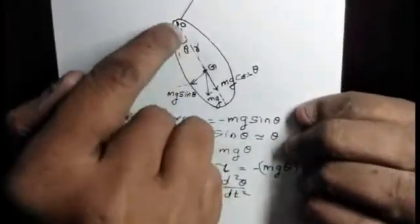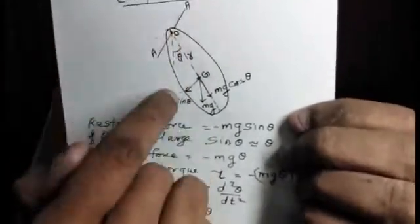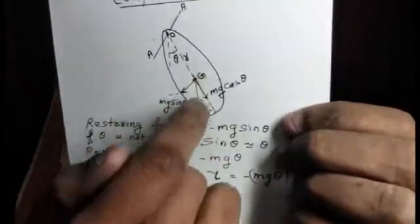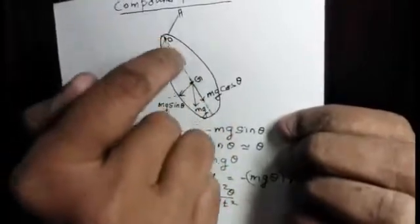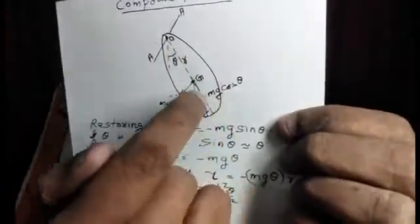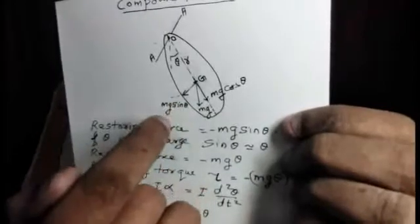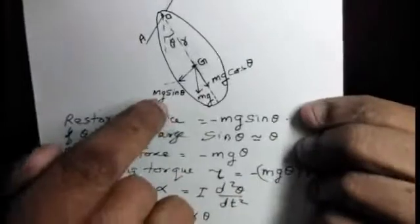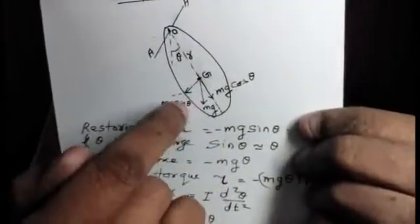When disturbed, OG makes an angle theta with the initial vertical line. The component perpendicular to OG is Mg sin theta. Mg sin theta is the restoring force, and this is the storing force. Theta is correct.